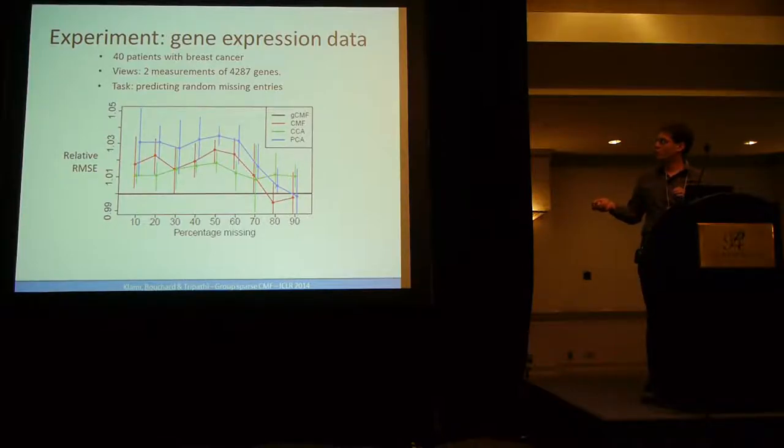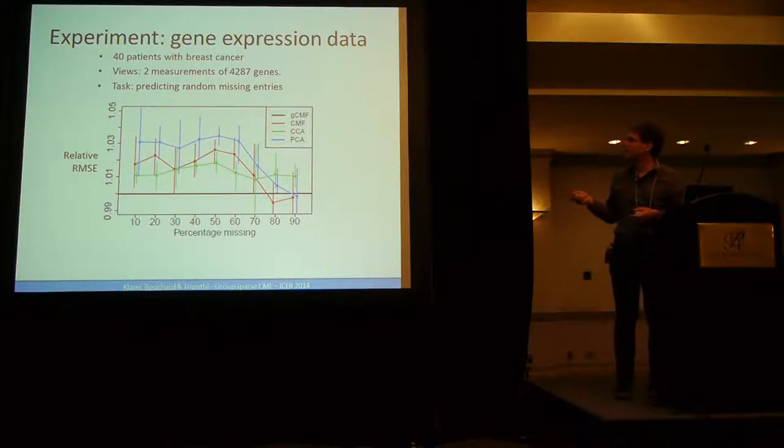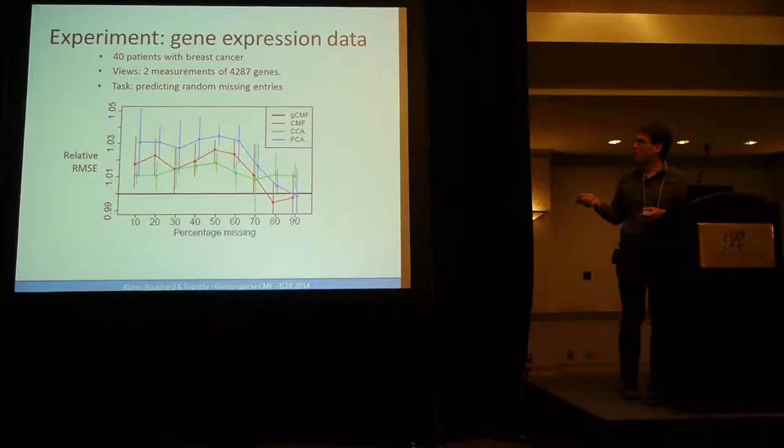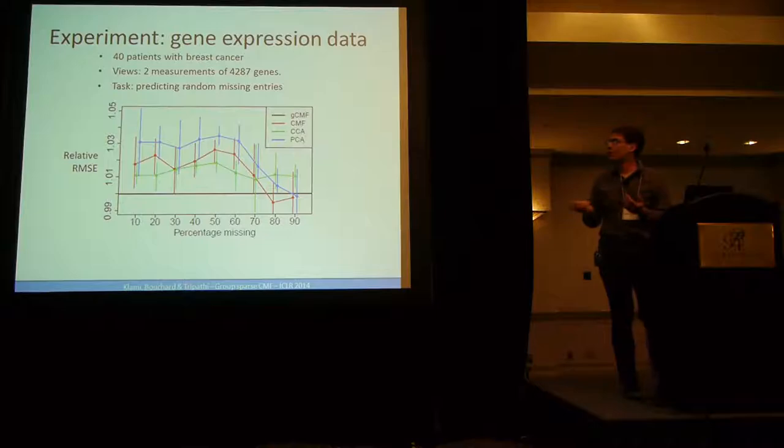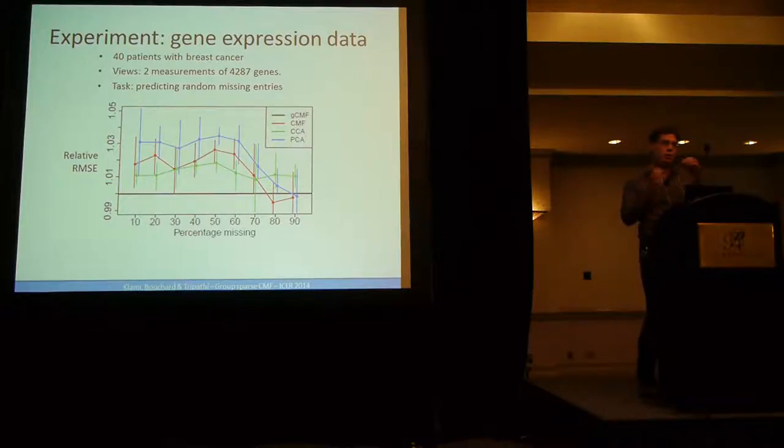So we see that here, for a large range of missing values, basically from 0 to 70%, having a group sparse prior is better than CMF. CMF is in red. And what's strange in this data is also that CMF and CCA are relatively similar. So the fact that you are able to take into account this additional view comes really with the fact that we have taken the group sparsity into account.